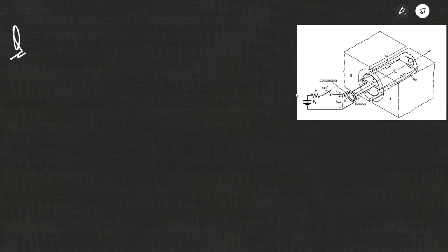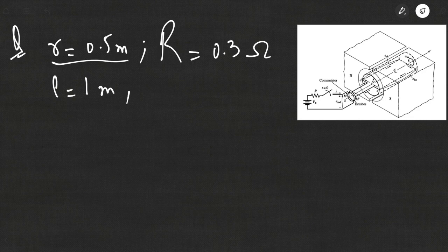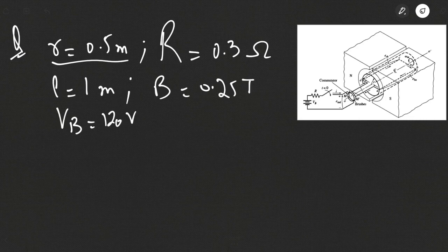For the machine shown in the figure, the given values are: r equals 0.5 meter, the resistance R equals 0.3 ohms, L equals 1 meter, B equals 0.25 tesla, and VB equals 120 volts, where VB is the voltage applied across the terminals of the loop.